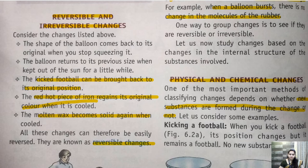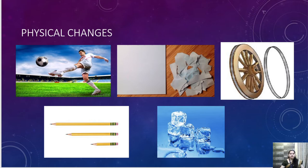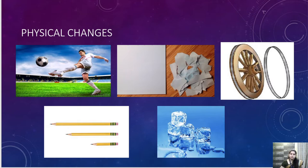Let's see a few examples of physical change. First, kicking a football — when we kick a football, the molecule of the football does not change. It will remain as it is. Even if the football bursts, the molecule of the football will remain as it is — it is not going to change. So this type of change is a physical change. Right now I am only focusing on physical and chemical change, not reversible and irreversible.